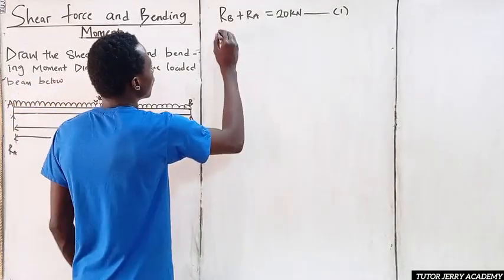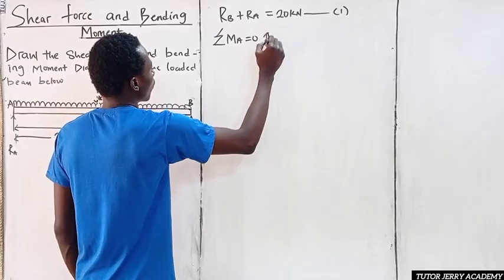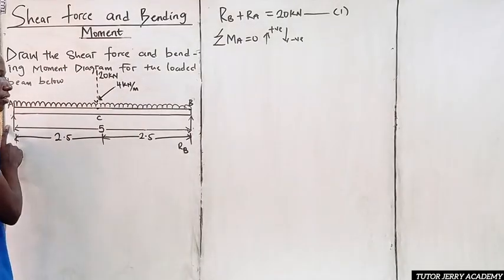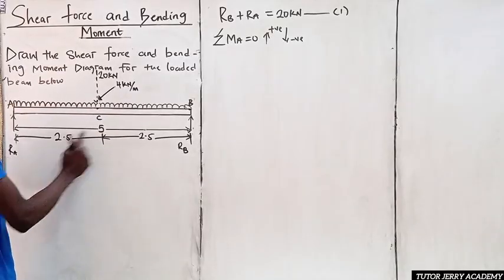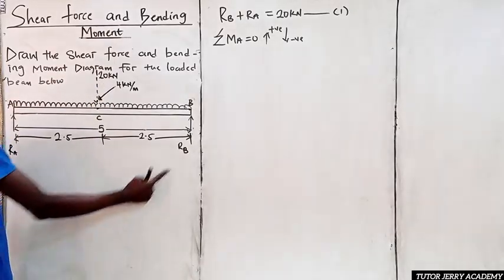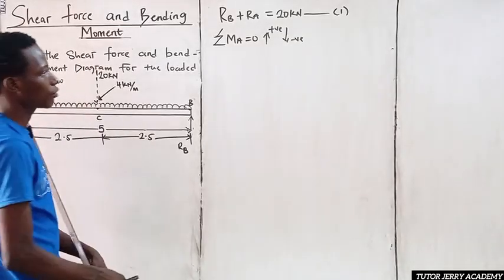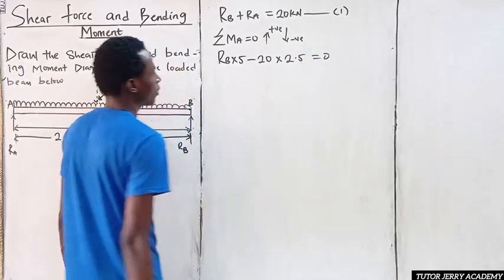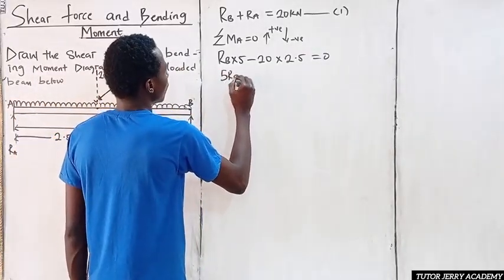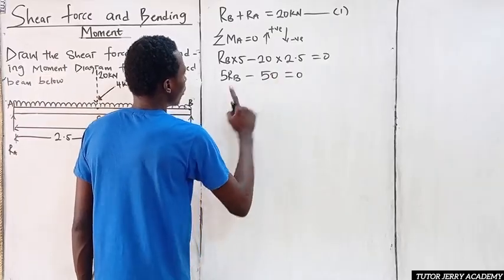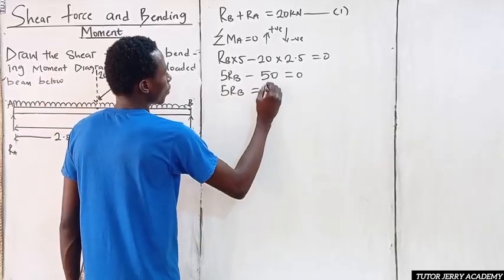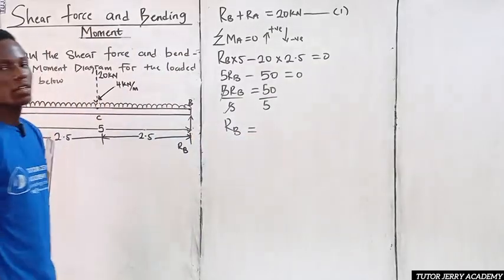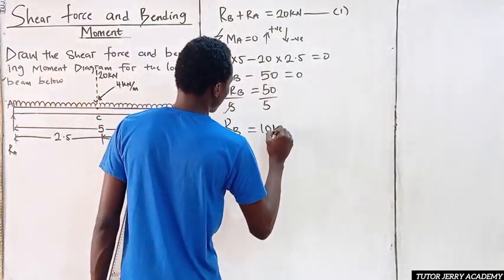We are also going to take moments at point A, where the summation of moments at A equals zero. Upward forces are positive and downward forces are negative. Taking moments about A: Rb multiplied by 5 minus 20 multiplied by 2.5 equals zero. So 5Rb = 50, and dividing both sides by 5 gives Rb = 10 kilonewtons.